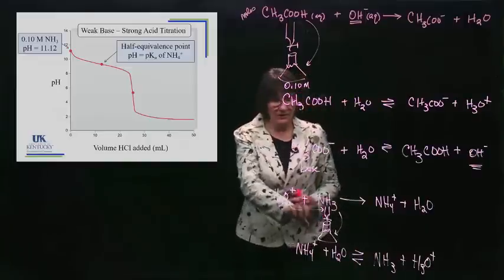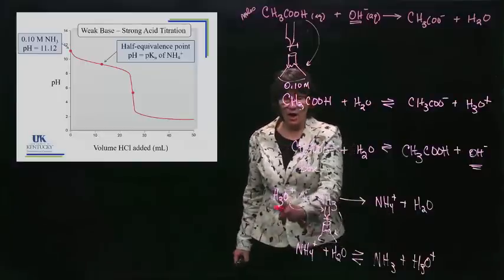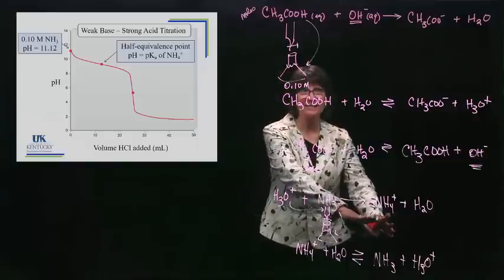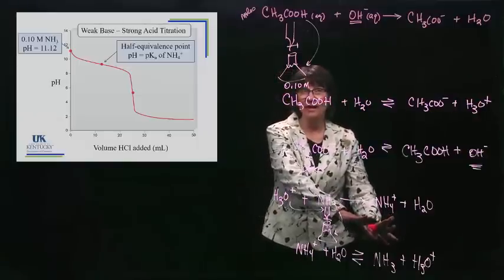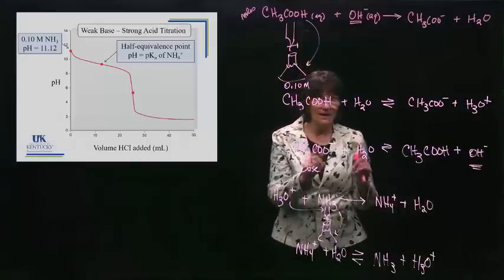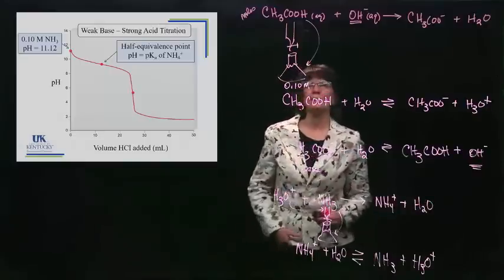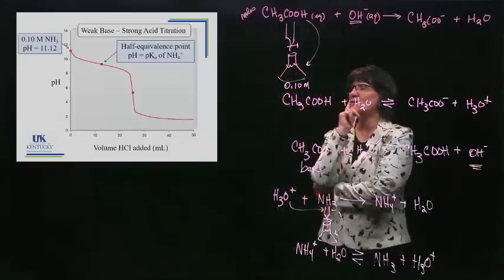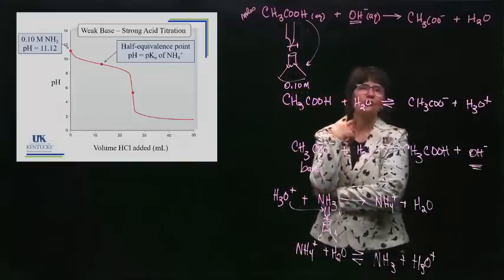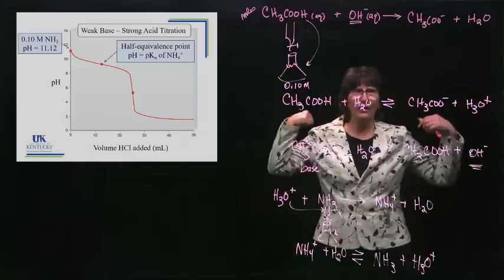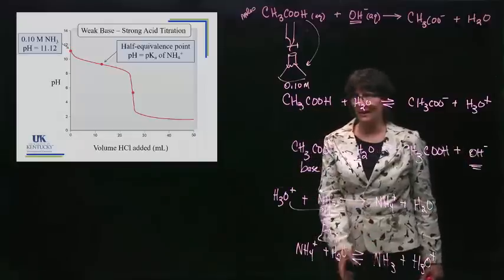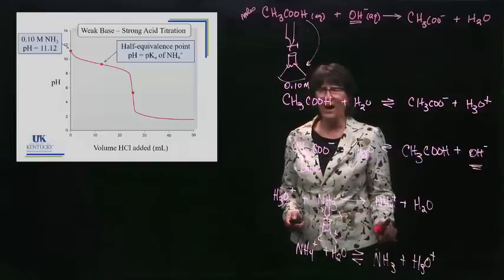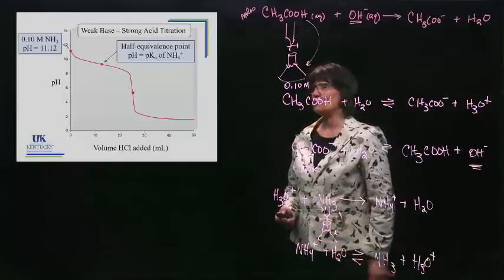When you're at the equivalence point, you've only got a weak acid, so the pH will be less than 7. The why: at the equivalence point you've consumed the reactants and you only have the weak acid remaining. Weak acids have a pH less than 7. How I keep it straight in my mind — the acid is strong, he wins, and you have an acidic pH. But the true reason is you've made a weak acid at the equivalence point. In this case it's 5.26.